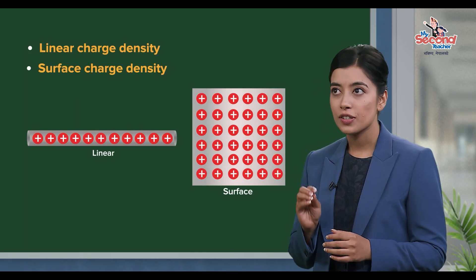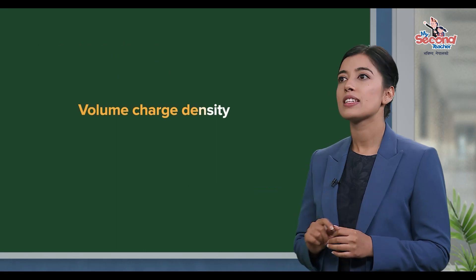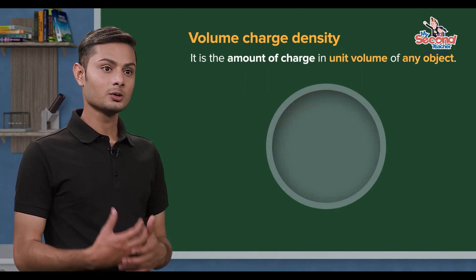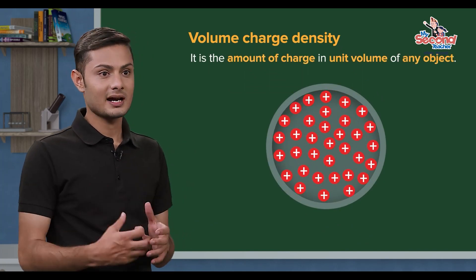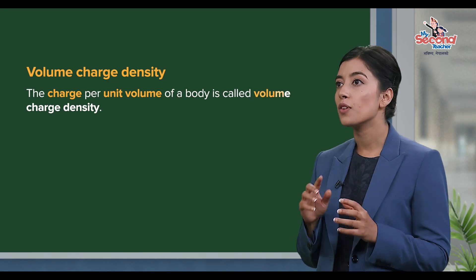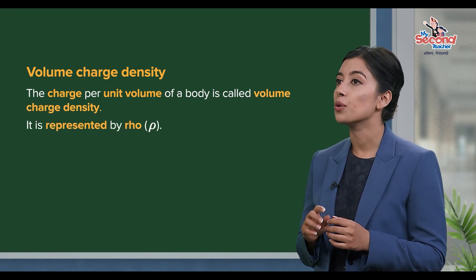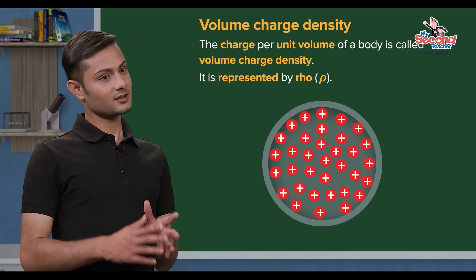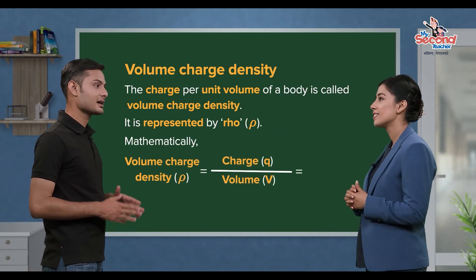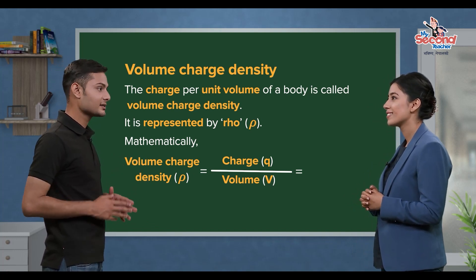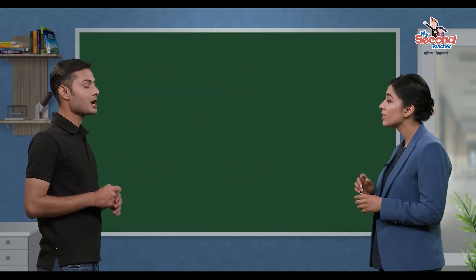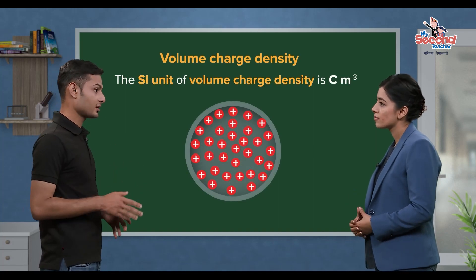The charge per unit volume of a body is called volume charge density, and it is represented by rho. Mathematically, volume charge density rho is equal to the charge divided by volume. The SI unit of volume charge density is Coulomb per meter cubed.